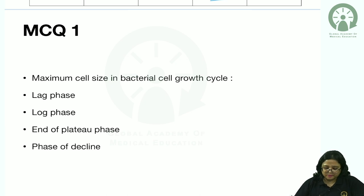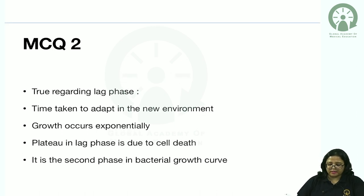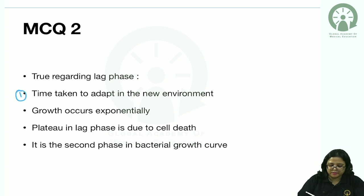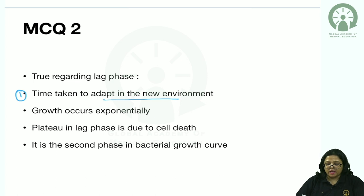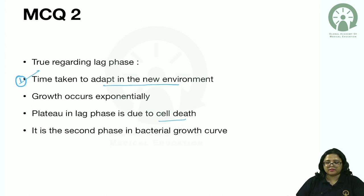MCQ: Maximum cell size in bacterial growth cycle is seen in the lag phase. Regarding the lag phase: it is the time taken to adapt in the new environment; growth does not occur exponentially; bacteria reach maximum size and produce metabolites and enzymes; there is no cell death; and it is definitely the first phase of the bacterial growth curve.